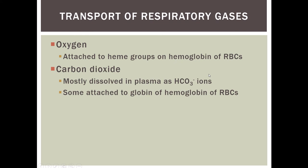Oxygen is transported primarily through hemoglobin — it attaches to the iron atom in the heme groups on the hemoglobin on our red blood cells. Carbon dioxide is transported mostly dissolved in the blood plasma as bicarbonate ions, although some carbon dioxide will attach to the globular part of hemoglobin on the red blood cells. So a small portion of carbon dioxide also travels on the red blood cells.